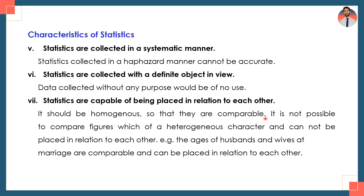The seventh characteristic: statistics are capable of being placed in relation to each other. They should be homogeneous so that they are comparable. It is not possible to compare figures of a heterogeneous character that cannot be placed in relation to each other. For example, ages of husbands and wives at marriage are comparable and can be explained in relation to each other.